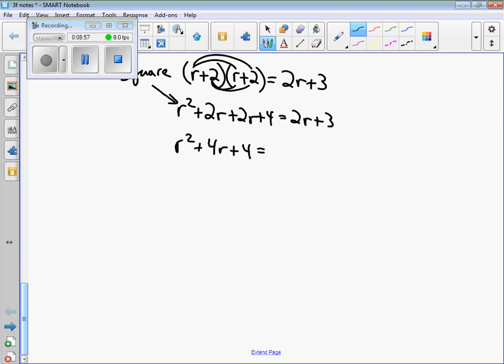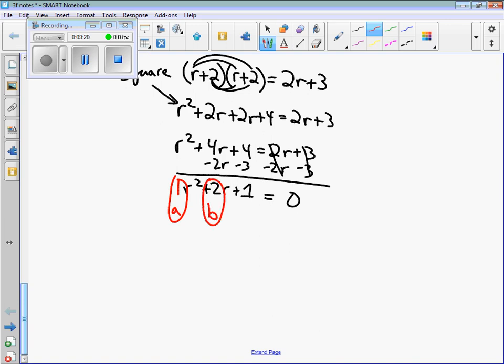r squared plus 2r plus 1 equals 0. So hopefully you're thinking a is 1, b is positive 2, and c is 1. So x equals, let's do the quadratic formula. Opposite of 2 plus or minus the square root of b squared minus 4 times a times c, all over 2 times a.